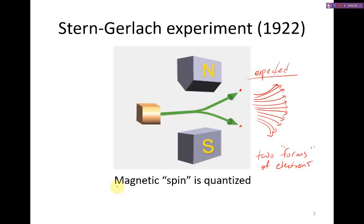In other words, they determined that the magnetic spin is quantized, that it has discrete values, and since it only ended up with two, we have two spin values for electrons.